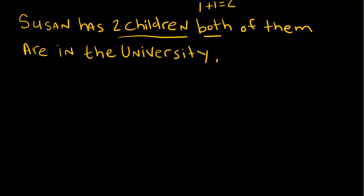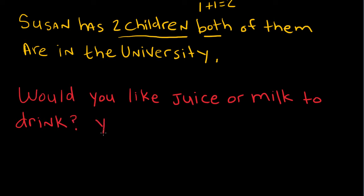Let's look at an example of either. Would you like juice or milk to drink? So in this sentence, you can have juice or you can have milk. You have a choice.